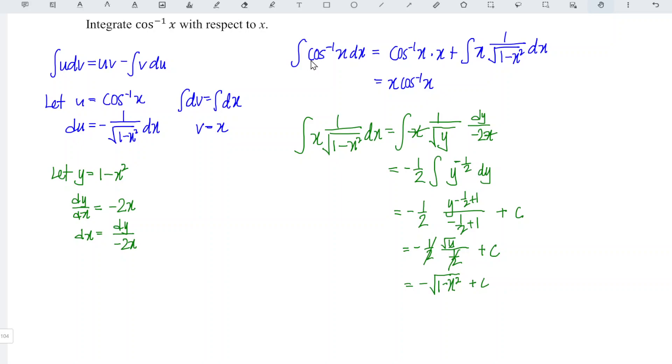Therefore, integrate arccos x is equal to x arccos x minus square root of 1 minus x square plus c. And hence, we're done.